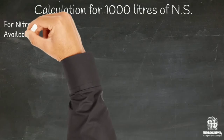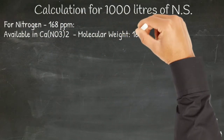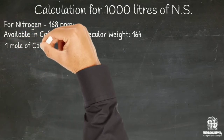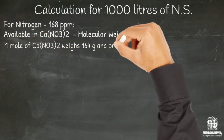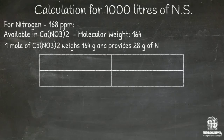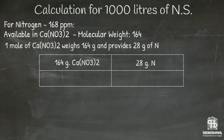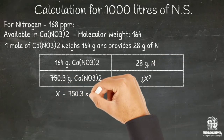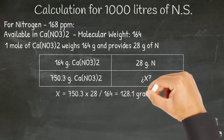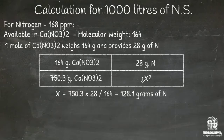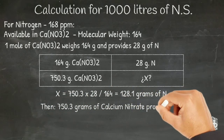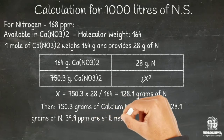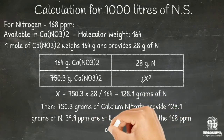We continue with the available nitrogen in calcium nitrate. The molecular weight is 164. One mole of calcium nitrate weighs 164 and provides 28 grams of nitrogen. We use 750.3 grams of calcium nitrate and calculate the nitrogen contained: X equals 750.3 times 28 divided by 164, resulting in 128.1 grams of nitrogen. So 750.3 grams of calcium nitrate supply 128.1 grams of nitrogen; we still need 39.9 parts per million to reach the required 168.